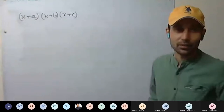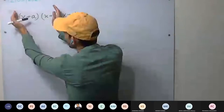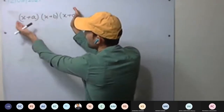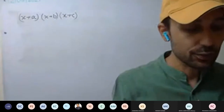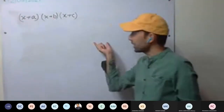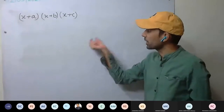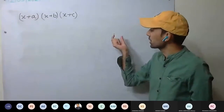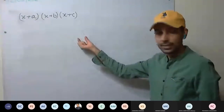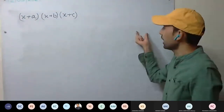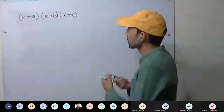How to solve: first multiply these two, or these two, then multiply the third. That you can do as homework. Multiply them, then arrange: x cubed term, x squared term, x terms and constant terms. So I am writing straight what you are going to get.